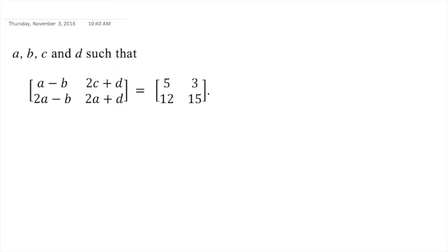This is a simple question of matrices. Just compare the elements. Here A minus B will be equal to 5, and 2A minus B will be equal to 12. So just write them down.